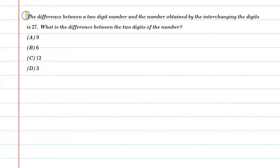Hello students, let's solve this question. The difference between a two digit number and the number obtained by interchanging the digits is 27. What is the difference between the two digits of the number?